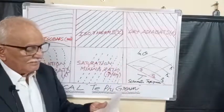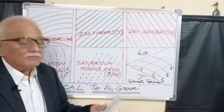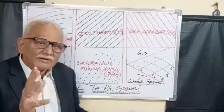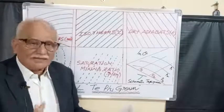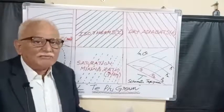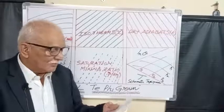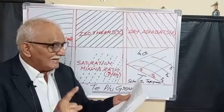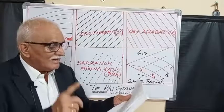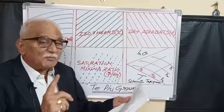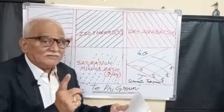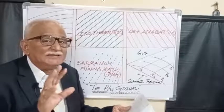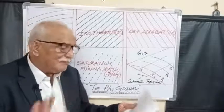Temperature and dew point data from radiosonde, satellite observations, and upper air observations are plotted on these diagrams to allow calculation of convective stability or convective available potential energy, which we call CAPE.